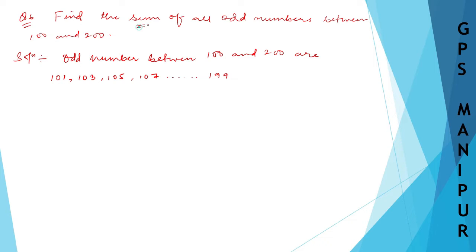Now we need to find the sum. The formula for sum is Sn equals n divided by 2, times 2A plus n minus 1 times D.